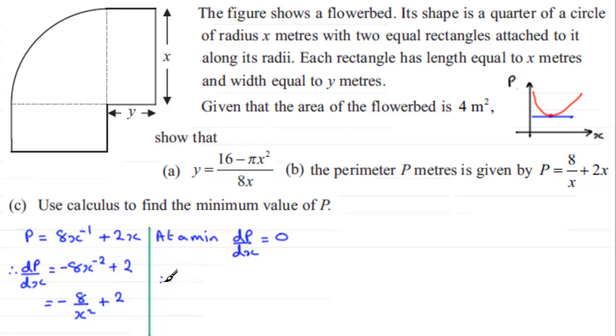And so therefore, all we need to do is put this equation, minus 8 over x squared plus 2 equal to 0. And you can solve this in many ways, but it's a good idea, I think, to get rid of the fraction first of all.